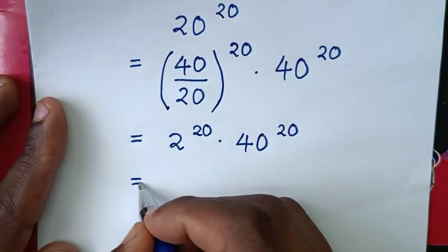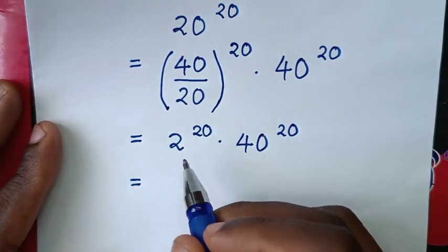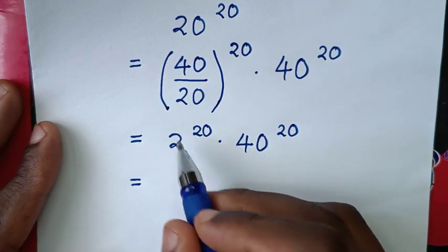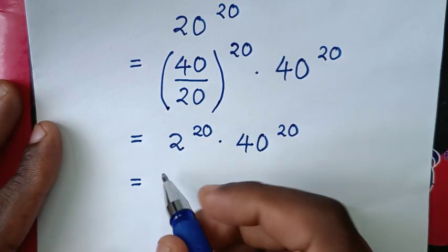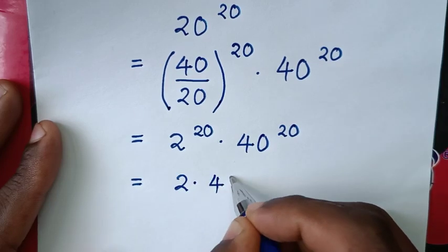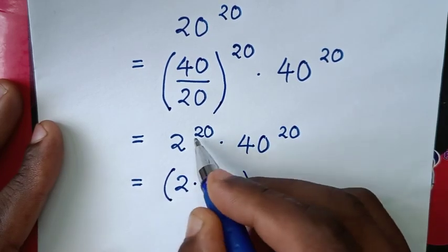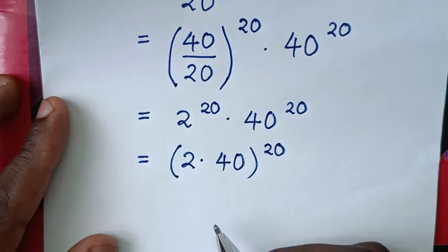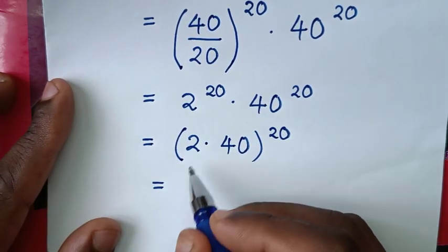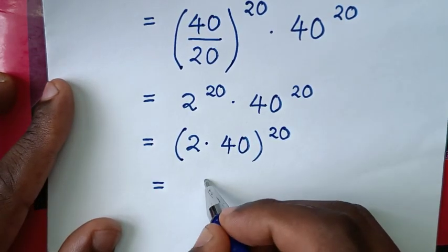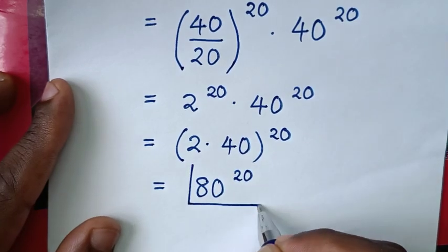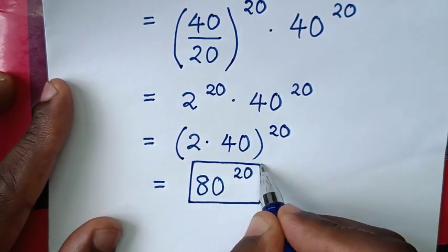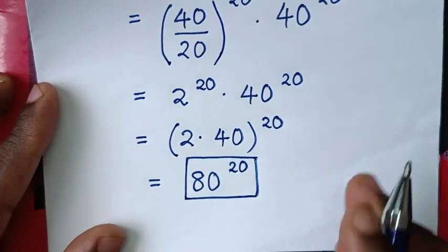Next, we apply the multiplication of exponents rule: different bases but the same power of 20. We multiply the bases together: 2 times 40 equals 80. So the result is 80 power of 20. Therefore, 80 power of 20 is our final answer for Method 1. Now let's solve using another method.